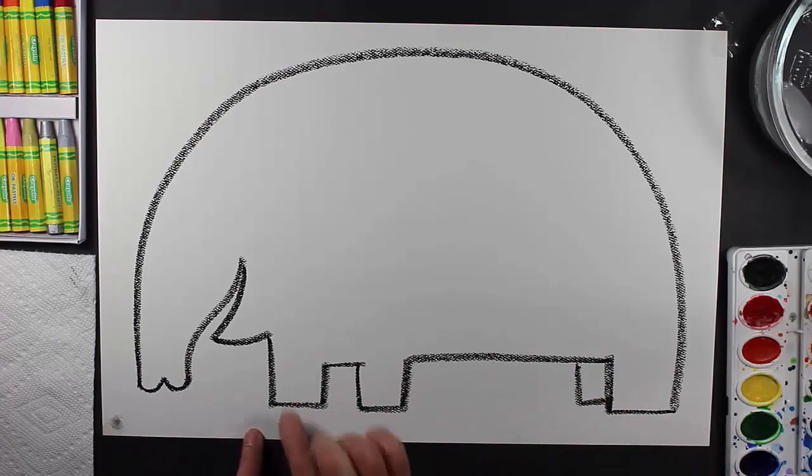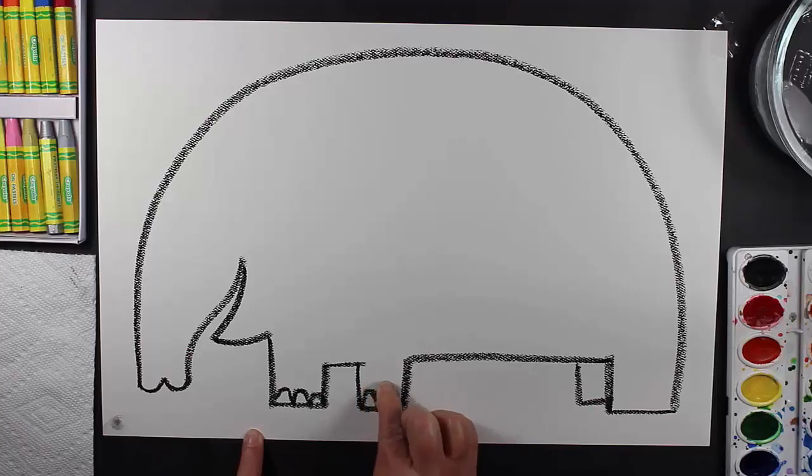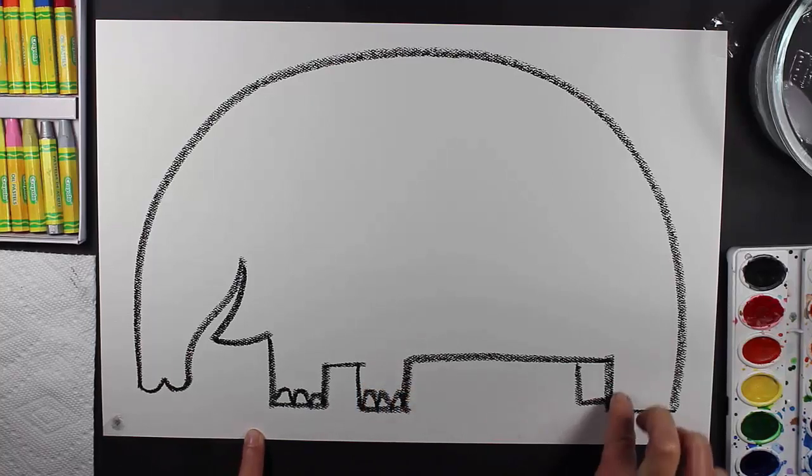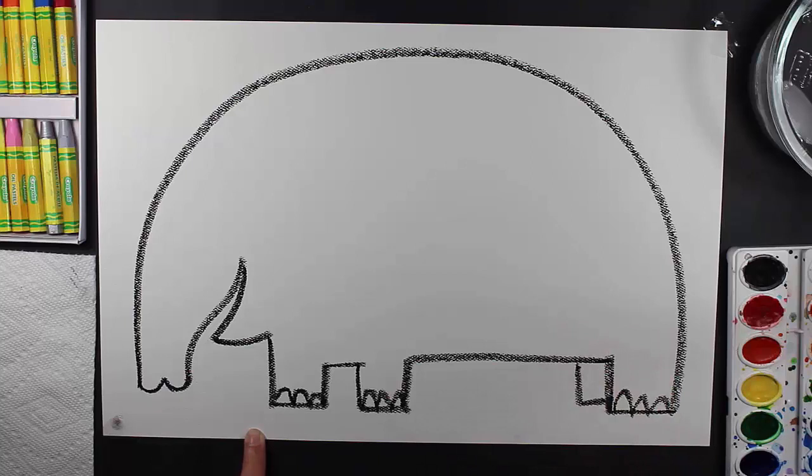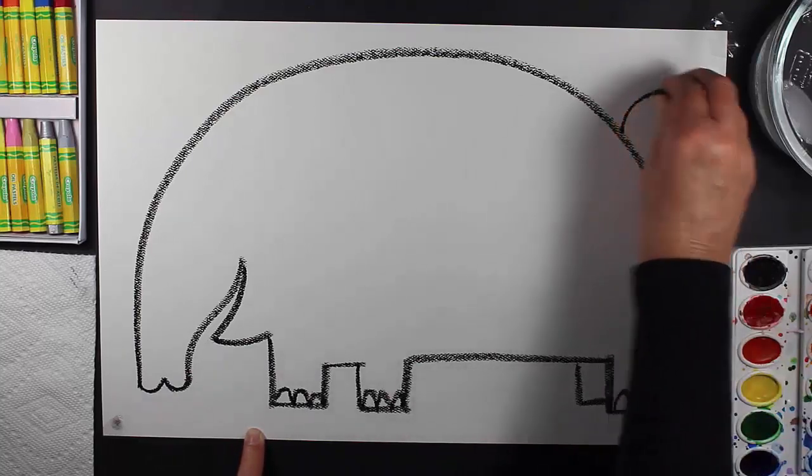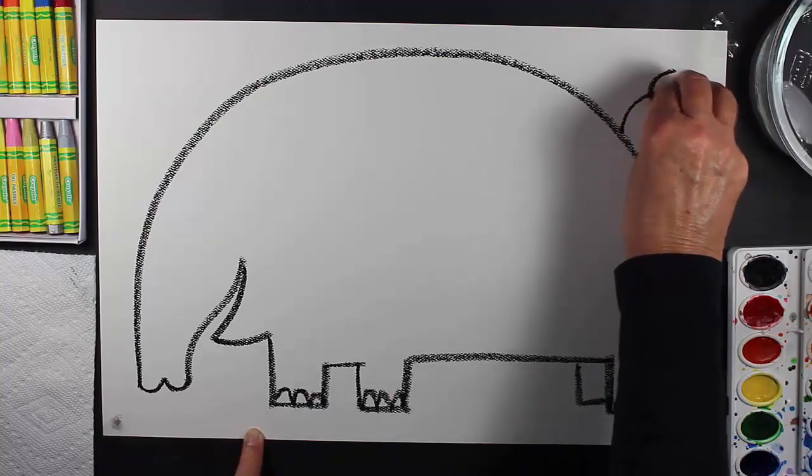Now we're going to make some upside down U's, and these are going to be our elephant toes. We're not going to make toes on this foot because this foot is behind and the toes are facing the other way.